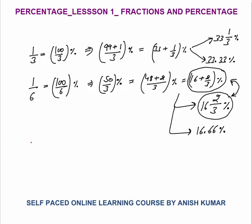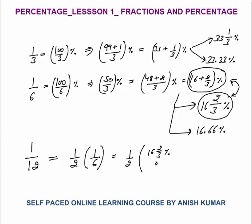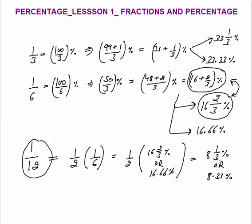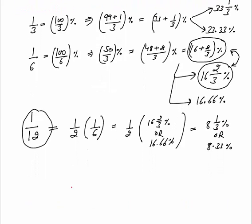One by 12 is half of 1 by 6. Since 1 by 6 is 16.66 percent (or 16 and 2/3 percent), half of that is 8 and 1/3 percent, or 8.33 percent. Very important: 1 by 12 equals 8 and 1/3 percent, or 8.33 percent.